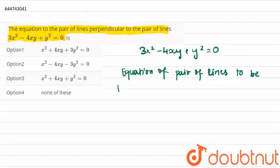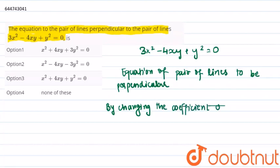to be perpendicular. We can use the property of a pair of straight lines. Therefore, by changing the coefficient of x² and y²,